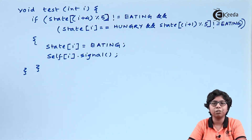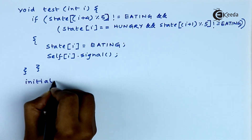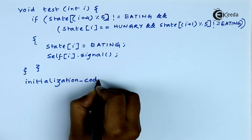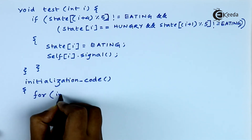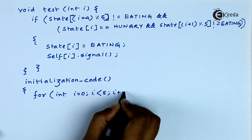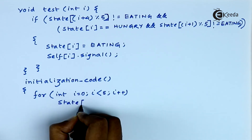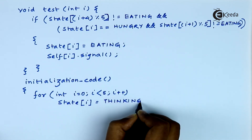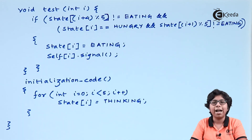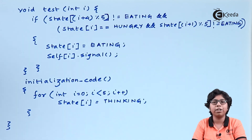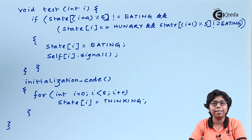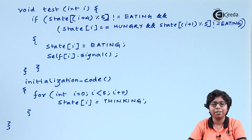In the initialization code, all philosophers at startup are put into the thinking state. We use a loop from 0 to less than 5 to put all philosophers into the thinking state, starting the dining philosophers problem. This monitor illustrates a deadlock-free solution, but not a starvation-free solution, to the dining philosophers problem.